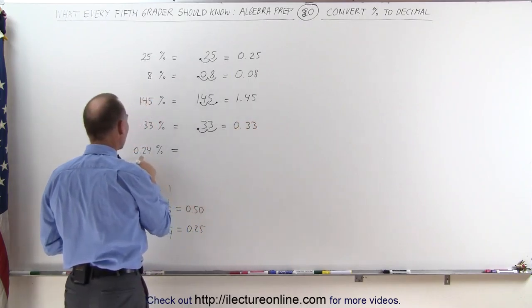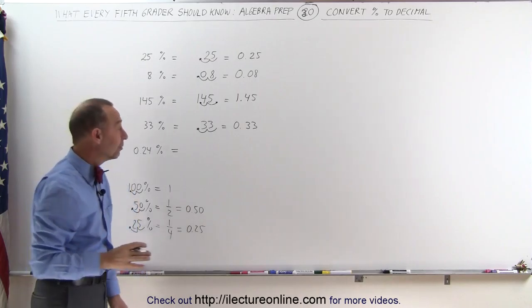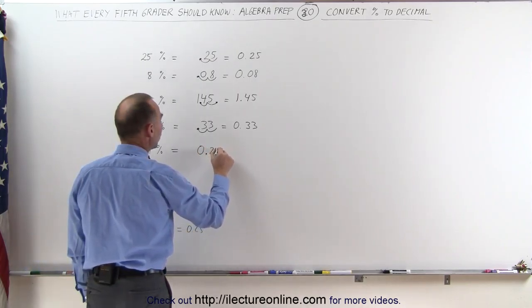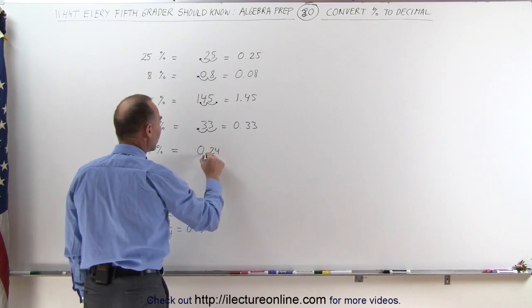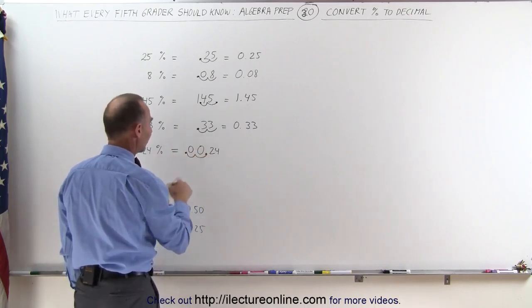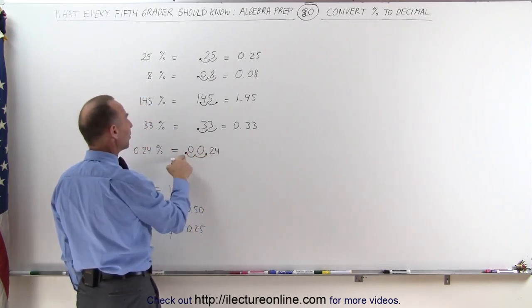And finally, 0.24%, what is that in terms of a decimal? We write down the number 0.24, we then take the decimal point, move it over two spots, put a zero there in the missing spot. Wow, that looks almost like a smiley face. Let's put a decimal point right there,